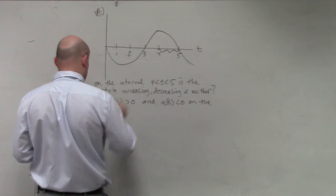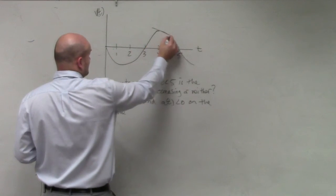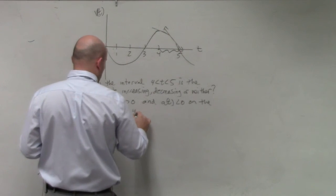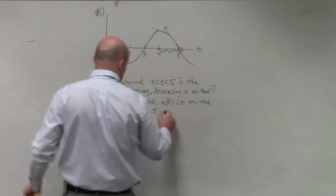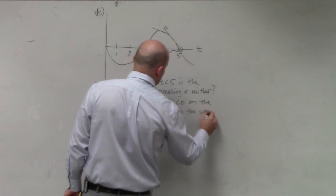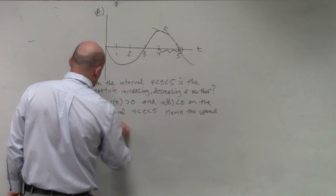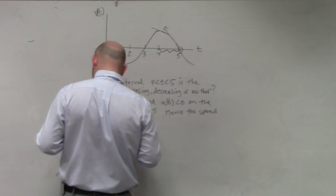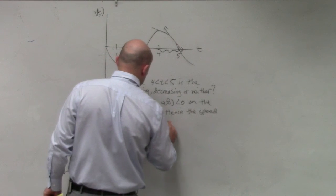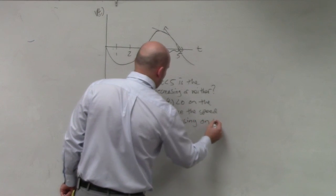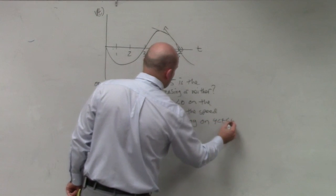a(t) represents the acceleration, which is going to be the slope of that particle on the interval 4 < t < 5. Hence, the speed of the particle is decreasing on 4 < t < 5.